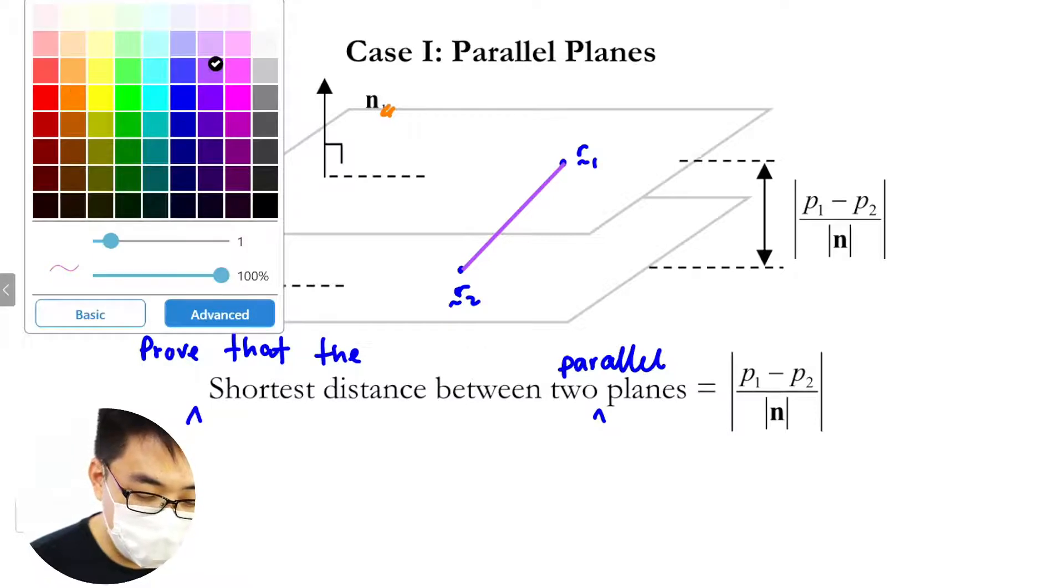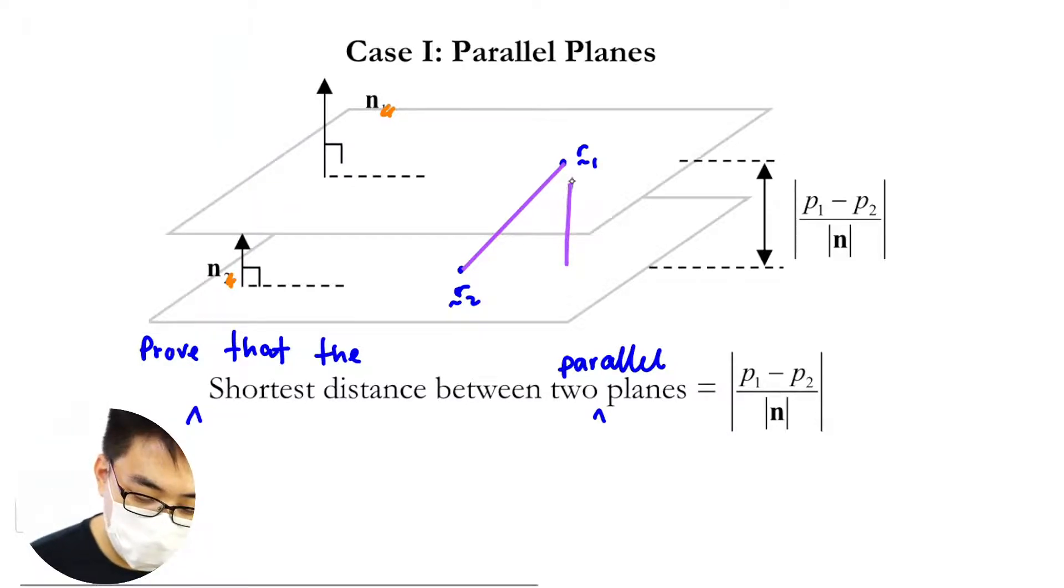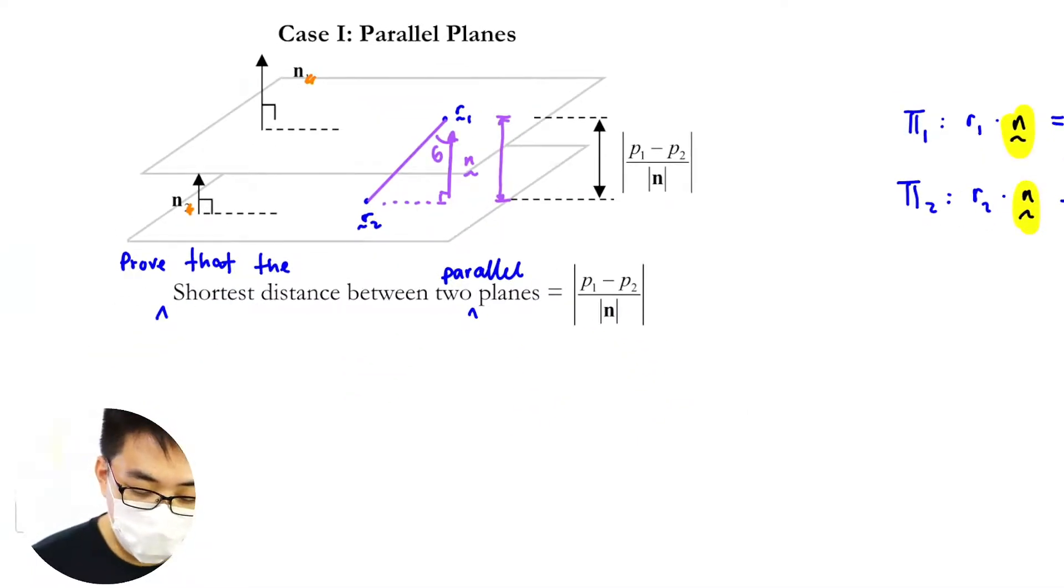Then after that what do we do? Use the all here and then we can actually use magic triangle. The distance that we want is actually here. Okay so I'm gonna let